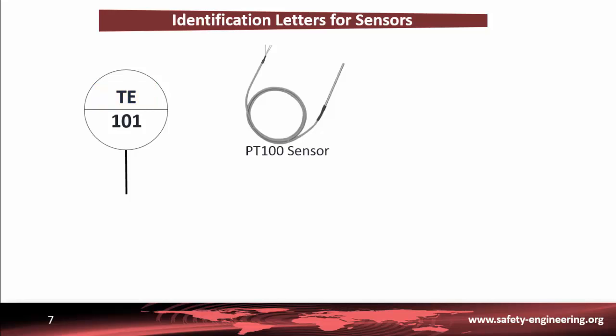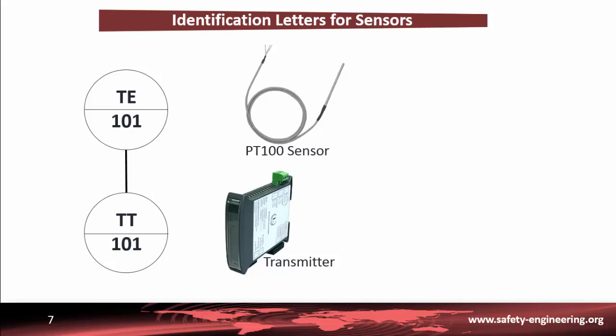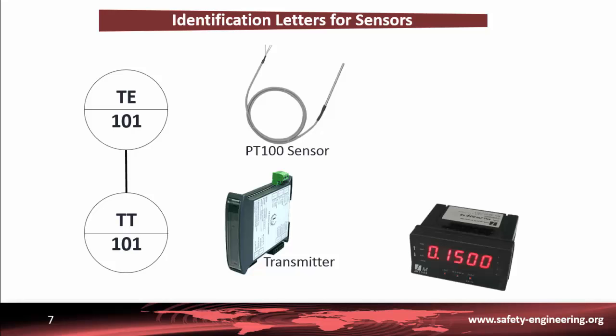If you want to indicate that the sensor is a sensor-transmitter, you put the letter T after the first letter in the second or third position. A transmitter is a device that converts a reading from a sensor or transducer into a standard signal — in general a 4 to 20 mA current loop. In a control loop, an elementary sensor must be connected to a transmitter. Sometimes operators need to check a measurement directly in the process. An indicator makes the reading possible — it is a device readable by humans that displays information about the process.